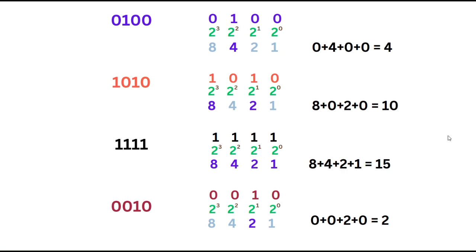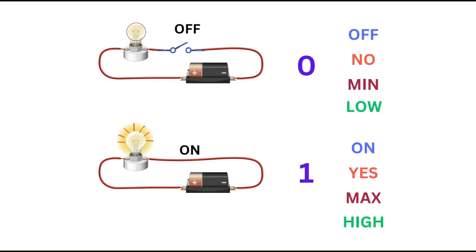There is a whole arithmetic for binary numbers which we will learn in the next video. But in this video the most important thing to understand is the relationship of binary numbers with electronics — there are two states, on and off, which can be discretely and easily created by electronics, and that is why electronics communicates on the binary number system. Thank you, and see you in the next video.